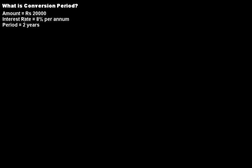Till now we have discussed how to calculate the compound interest and the total amount when the interest rate is compounded annually, semi-annually, and quarterly. Now we want to discuss another important point: what is a conversion period? Let's take the same previous example — amount is rupees 20,000. This is a loan you are taking from a bank, sanctioned at an interest rate of 8% per annum for a period of two years.